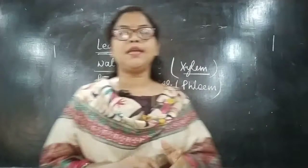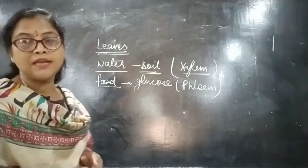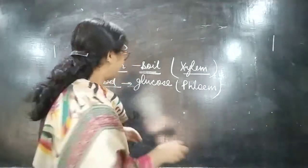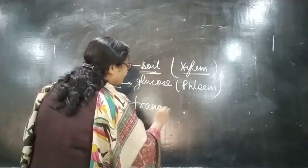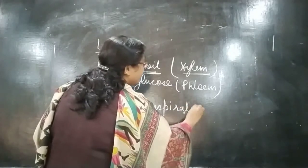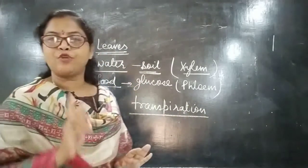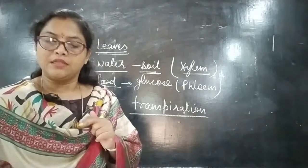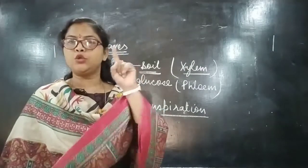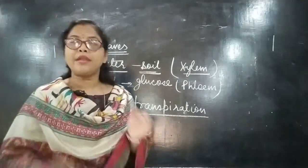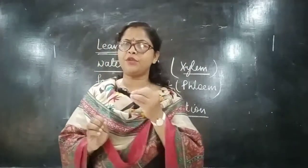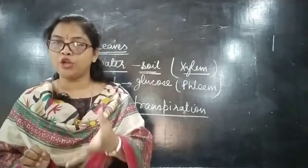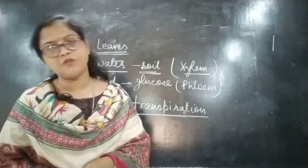At the time of photosynthesis, the process of transpiration is continuous. Transpiration means excess water is removed from the plant and released in the form of water vapor through stomata. Only about two or three percent of water is utilized for photosynthesis; the rest is released by transpiration. This transpiration process is continuous.